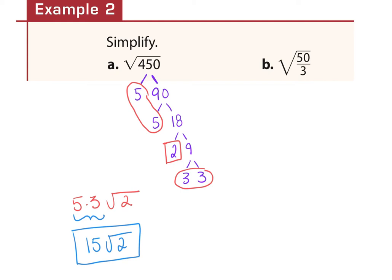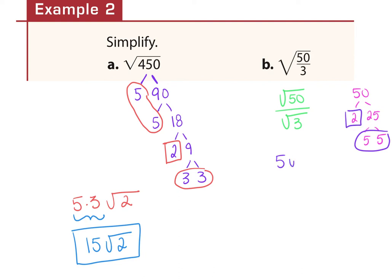Let's look at the fraction. Fractions are handled the same way — you just do them individually. You can think of this fraction as the square root of 50 over the square root of 3. I'm going to take that 50 and split it up using a factor tree. You can see I have a pair there, so the five can come out and the two will stay in. Then I have the square root of 3 on the bottom. Three is already prime — I cannot split that up anymore.